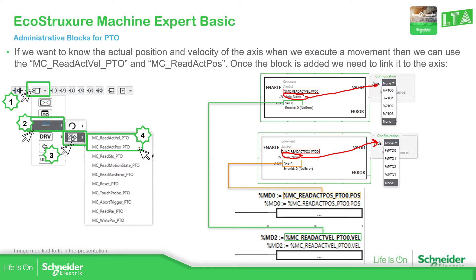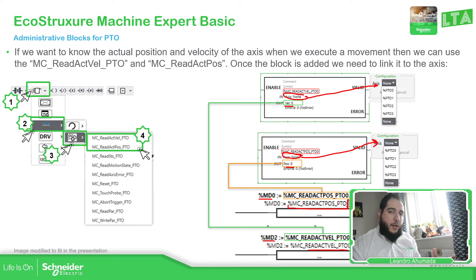We can read the actual position and actual velocity using the block when you are online. But if you want to share this information to an HMI, you need to use the instance of the PTO and then the number you have — dot position or dot velocity from the readActualVelocity — and move that value to a %md variable so you can use it in an HMI.